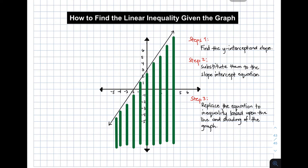So for step number one, we have to find the y-intercept and the slope of this given line. When you say y-intercept, it is the point within the y-axis. And if you will be analyzing this given graph, this is your y-intercept, meaning your b is equal to 3.